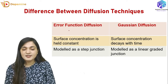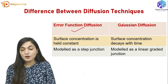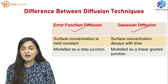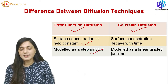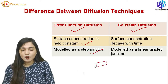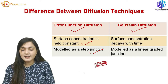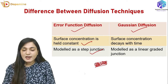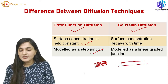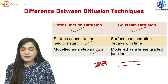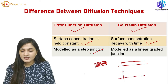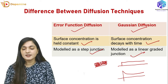Now we see the difference between the two diffusion techniques. In constant source diffusion (error function diffusion), the surface concentration remains constant — this is a step junction model where the dopant concentration stays constant at every instant of time. In Gaussian diffusion (limited source diffusion), the surface concentration decays with time — the surface concentration decreases linearly, making it a linear graded junction.